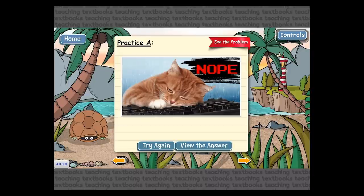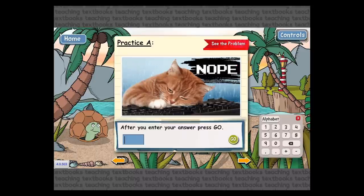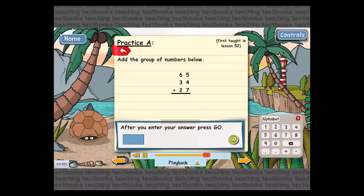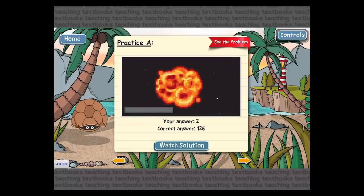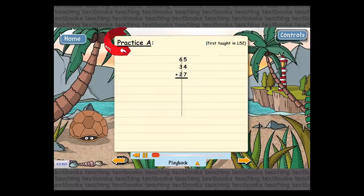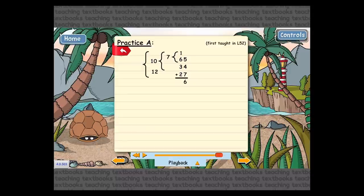There are lots of neat stickers that appear each time a student answers a problem. I'm going to try this one again — it's a problem that gives me two chances. I'm going to miss it again. Now I get a different sticker, it tells me the correct answer, and I can watch the solution. The solution shows how to do that problem step by step.